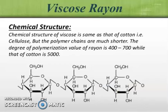The chemical structure of viscose rayon, as you can see here, just resembles that of cotton fibre. But the degree of polymerization is much lower — about 300 to 700 — depending on the type of viscose rayon fibre.